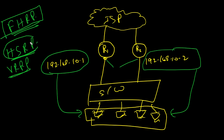So if I configure HSRP, the HSRP protocol will create one logical IP address from these two physical IP addresses. That means I am creating one logical default gateway from two physical default gateways. This is default gateway 1 and this is default gateway 2 — we have two default gateways.